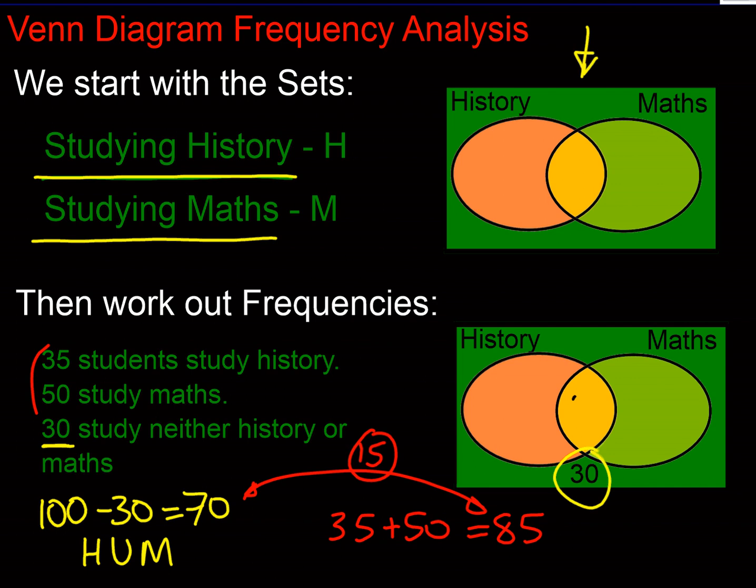Therefore we can work out quickly that there's 15 students doing history and maths. Looking at the left hand side, if there's 35 students doing history, then that means there's 20 doing history and not maths. On the right hand side there were 50 students doing maths, so 15 are doing both, then the other 35 are only doing maths.